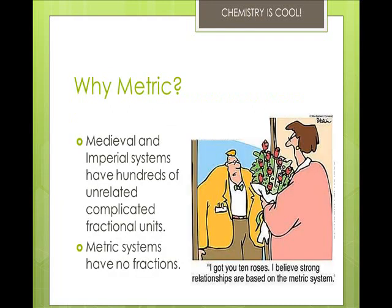So why metric? Well, because the medieval and imperial systems have really unrelated, really super complicated fractional units, and the metric system has no fractions. Some imperial units to show you how silly this all is: one township equals 36 sections, which equals 23,040 acres. One acre is 160 square poles, or 100,000 square Gunter links, or 43,560 square feet, or 10 chains.